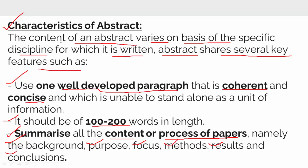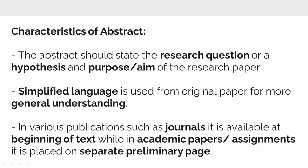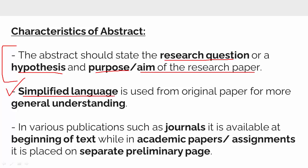The abstract is a summary of the whole paper — covering the purpose of why the work was done, the focus of that work, the methods, the results, and the conclusions from that research. Your abstract should state the research question or the hypothesis used in that paper. It should also state the purpose and aim of the research. In the abstract, we use simplified language for more general understanding.